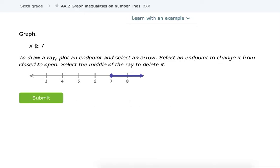Now, if we get one that is, this one's greater than or equal to, so we need a solid dot. If you need an open dot, you can just click on the dot and it will make it an open dot. So we can click again to make that a solid dot.